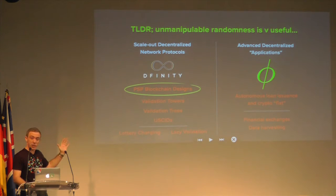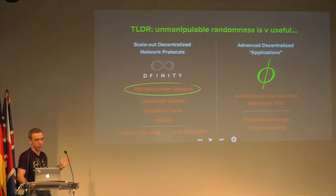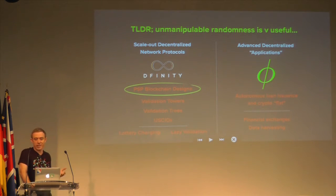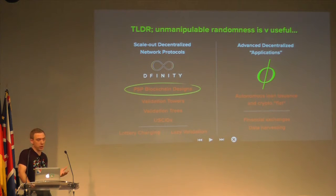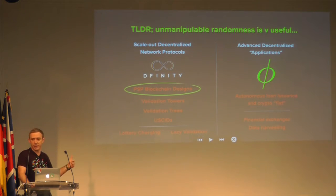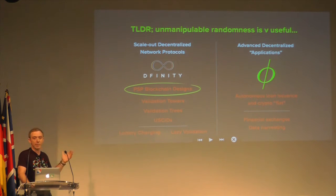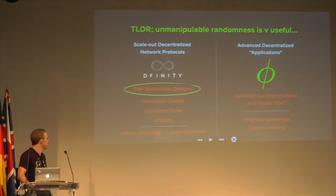On the application side, you also need randomness for advanced applications. There's a project called PHY, which is a kind of decentralized commercial banking system that produces a thing called Crypto Fiat. It does this by giving out loans algorithmically — it's an autonomous system that gives out loans using validators as proxies — and it's only able to do this if it has this kind of random source.